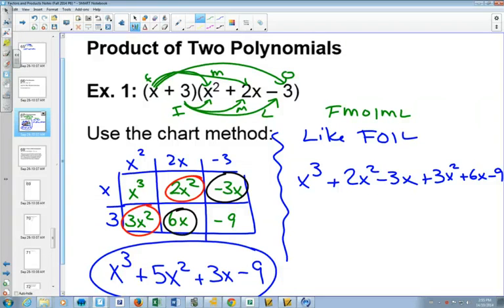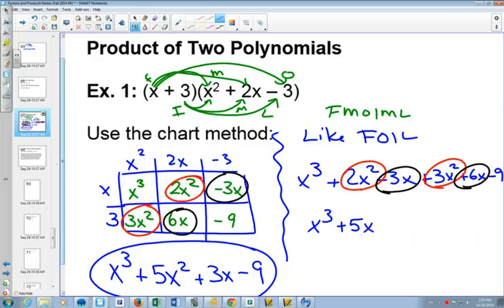Once again, you have some like terms, the 2x squared and the 3x squared. Notice those are the same as we had over here. The minus 3x and the plus 6x are also like terms. And when you combine them, you get the exact same answer that we did with the chart method.